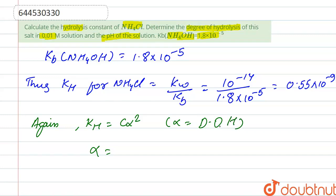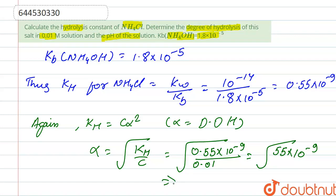So we put here the value of Kh, that is 0.55 into 10 to the power minus 9 upon concentration that is given 0.01. So it becomes 55 into 10 to the power minus 9. After solving this, we get 7.41 into 10 to the power minus 3.